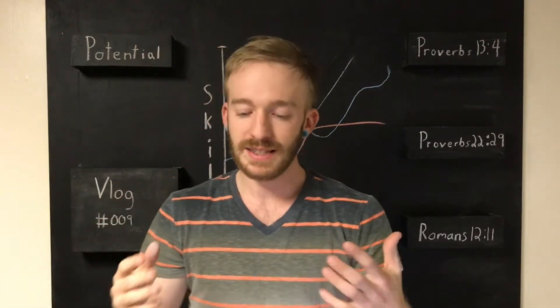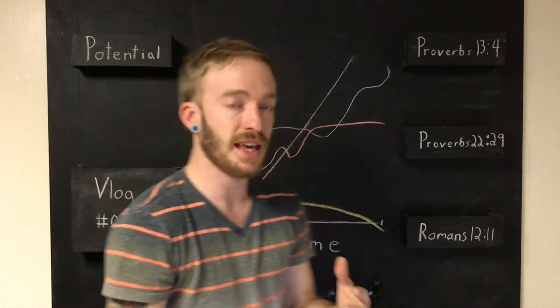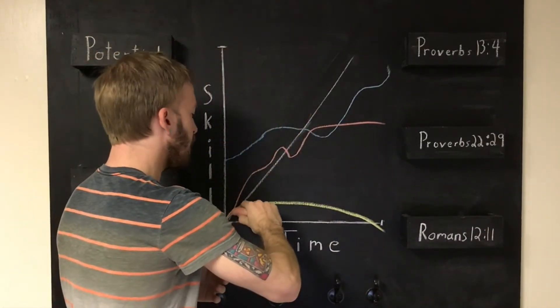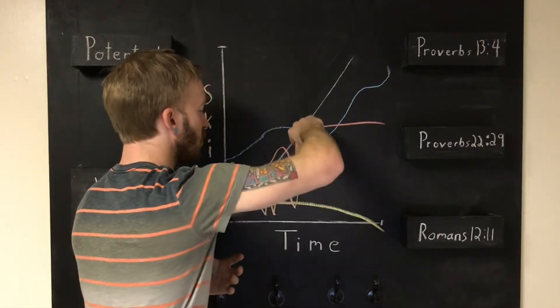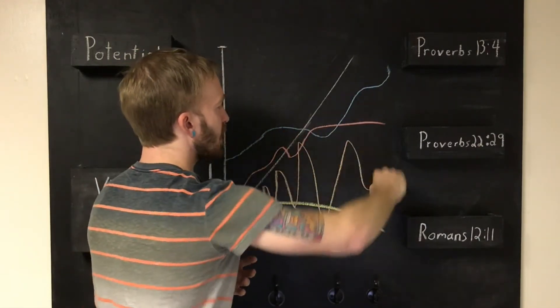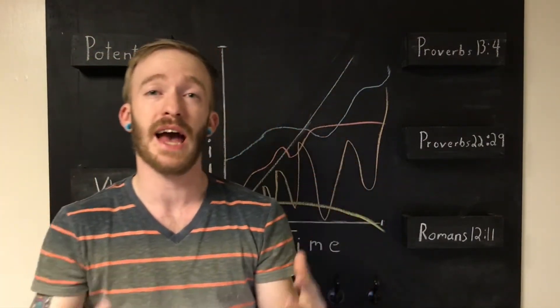So what is the key to breaking through your potential? The key is never giving up. No matter how long it takes, maybe your line looks like this. You just got to keep going until you can reach the maximum in that area. You got to work at it. You got to want it more than you've wanted anything else.